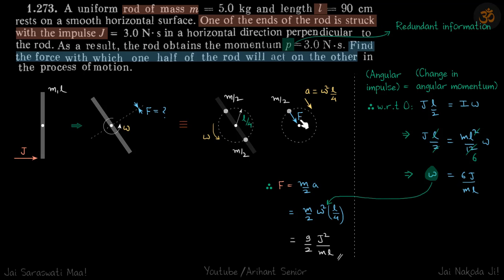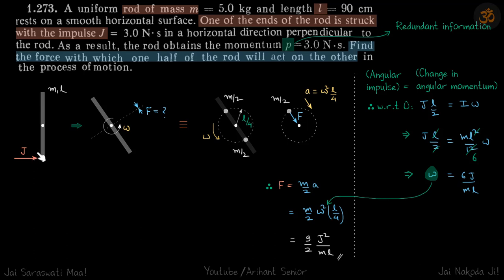So let's find this force. F equals (M/2) times the acceleration, which is ω²(L/4). But we don't know omega, so we need to use angular momentum. Just as linear impulse equals change in linear momentum, angular impulse equals change in angular momentum. The angular impulse is the linear impulse times its perpendicular distance — so angular impulse equals J times its moment arm distance.